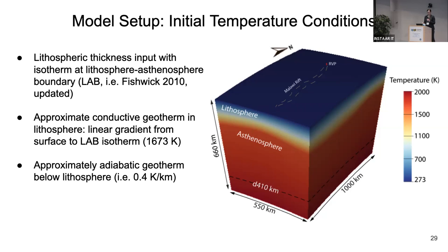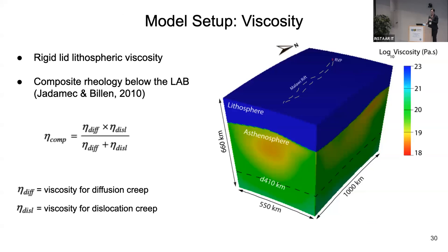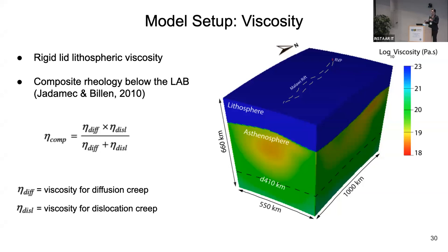This is a 3D representation of the Malawi Rift region showing the initial temperature condition — blue is cooler, red is hotter. For viscosity, we also impose the rigid lid assumption, though one could easily couple this to the lithospheric deformation model to allow deformation. Below the lithosphere, we use the harmonic average of dislocation creep and diffusion creep for a composite rheology.